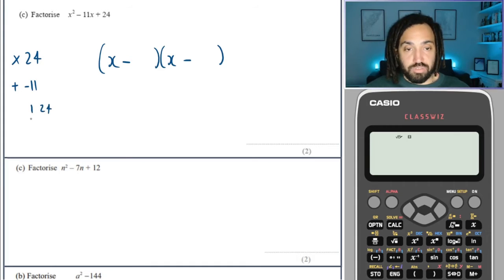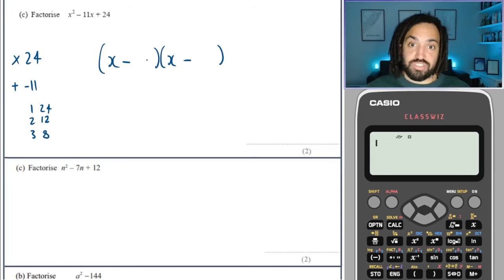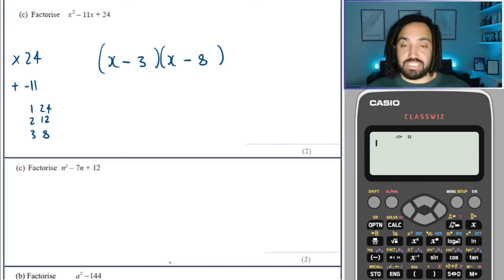Okay. Factors 24 are 1 and 24, 2 and 12. 2 and 12. No, that's not good. 3 and 8, though, that is very good, because 3 and 8, when they're like that, they'll add to make 11. Perfect.